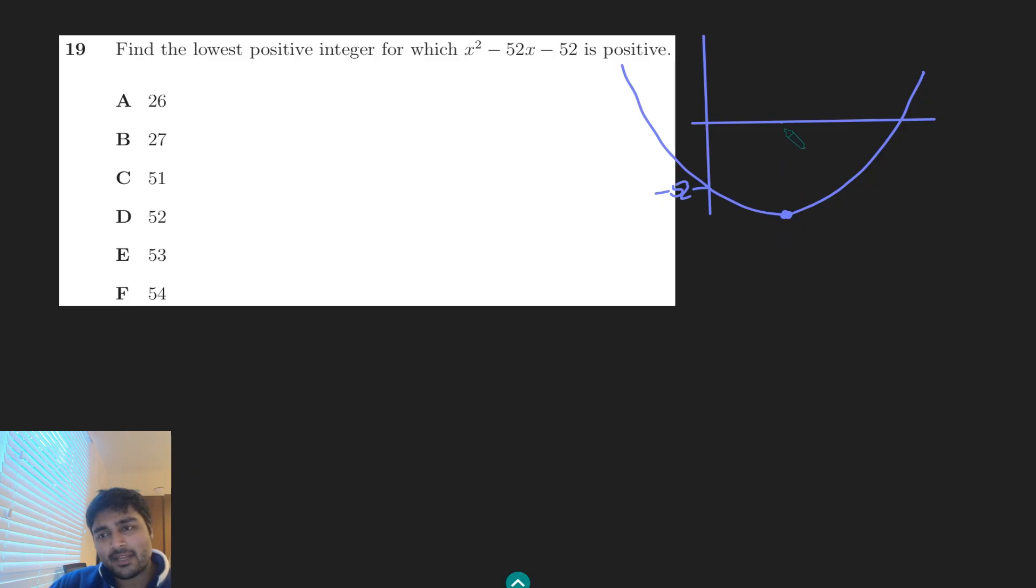This minimum point is going to have x-coordinate 26, and you can see this in a few ways, either by differentiating this and making this equal to zero, or by completing the square. But what we notice is that all the options here are 26 or above, and so we can see in this interval, the graph is increasing.